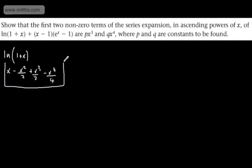In this question, we're asked to show that the first two non-zero terms of the series expansion in ascending powers of x of the natural log of 1 plus x plus the quantity x minus 1 multiplied by the quantity e to the x minus 1 are px cubed plus qx to the fourth, where p and q are constants to be found. Let's first deal with the natural log of 1 plus x. If we expand this, we get x minus x squared over 2 plus x cubed over 3 minus x to the fourth over 4, and so on.